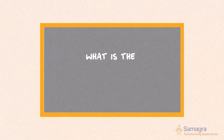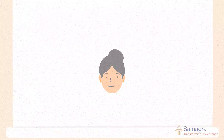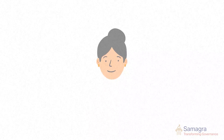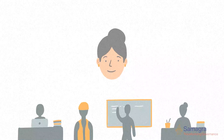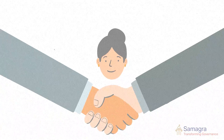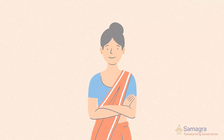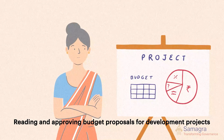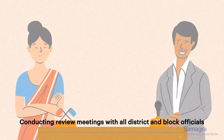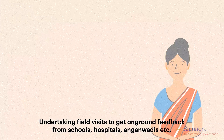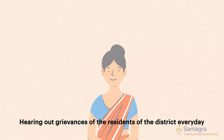What is the role of the district administration? At the macro level, the DC is the implementer-in-chief or chief coordinating officer of the district. She has to be aware of the work being done and progress made by officials across all departments, remove bottlenecks, and streamline coordination between departments that might need to work together. A typical day for a DC involves multiple competing priorities: feeding and approving budget proposals for development projects, chairing review meetings with district and block officials, presenting the district's status in reviews by the state executive, undertaking field visits to schools, hospitals, and aanganwaris, and hearing out grievances of district residents.